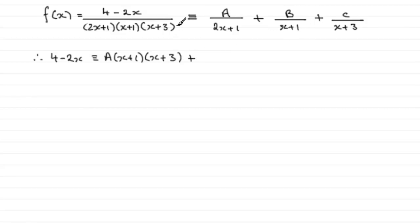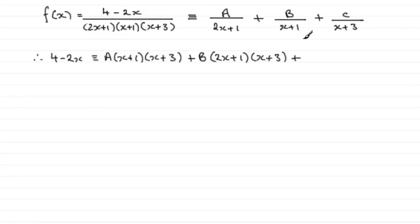For the next term B/(x+1), multiplying by the denominator cancels the (x+1), leaving B times (2x+1)(x+3). And for the final term C/(x+3), the (x+3) cancels out, leaving C times (2x+1)(x+1).